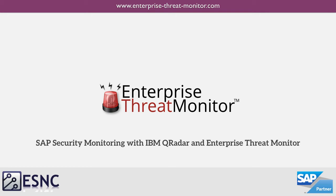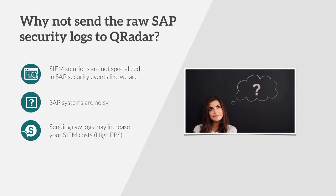For this, you need a third-party product. That's because typical SIEM solutions, such as IBM QRadar, focus on OS and network logs, and therefore they do not have an in-depth understanding of SAP internals. So the first question you might have: why don't we send the raw SAP security logs directly to QRadar? Well, because SIEM solutions are not specialized in SAP security events like Enterprise Threat Monitor is.